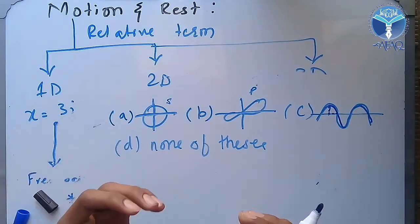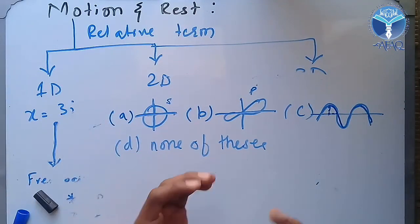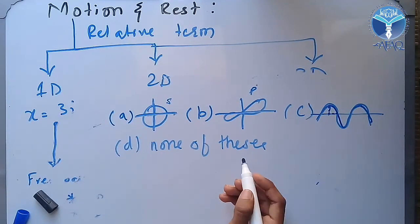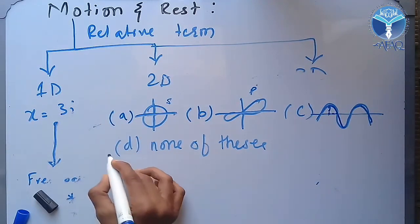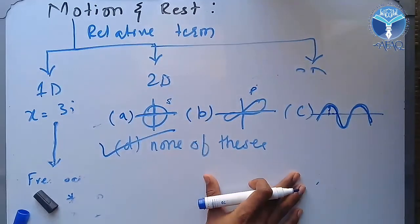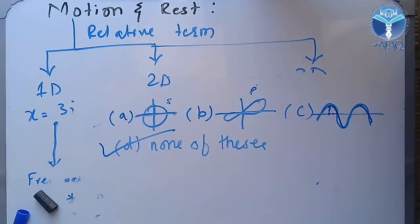We have one D. There is no one dimensional movement in this case — none of these. I hope you liked the video. For more videos, subscribe to our channel. Thank you very much.